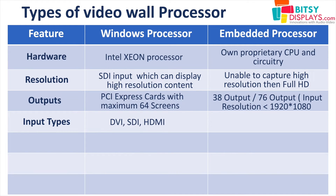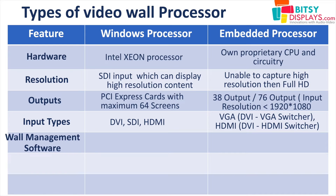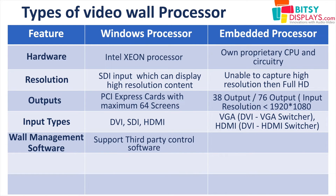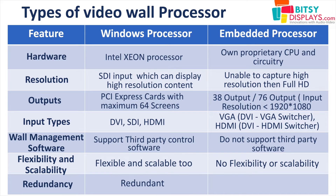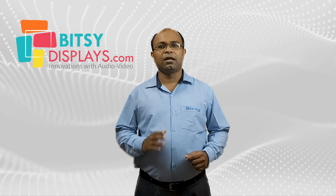For input types, window-based processors support SDI and HDMI input. Embedded processors support VGA, SDI switcher, HDMI switcher, and SDI input. For wall management software, window-based processors have different kinds of software with specific features for your application, whereas embedded processors cannot install any other software — they have proprietary built-in software. In terms of flexibility and scalability, window-based processors are flexible in terms of software and scalable in terms of input and output, whereas embedded processors are neither flexible nor scalable. For redundancy, window-based processors have redundancy for mission-critical applications, whereas embedded processors do not have any redundancy. So overall, window-based processors are better than embedded processors, though they may be a slightly more expensive solution.